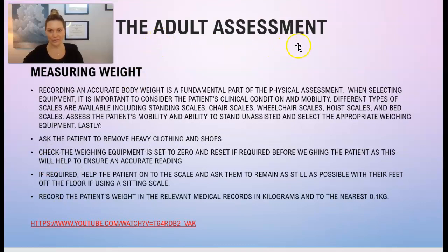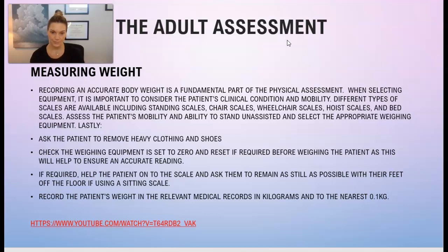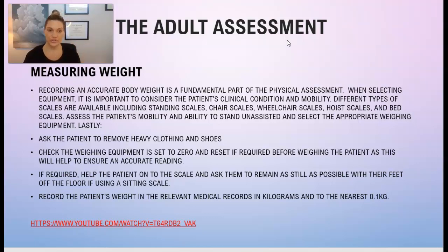Now on to weight — we'll also be measuring weight on every encounter with a patient. Accurate body weight is very important for the physical assessment and overall physical health. When selecting equipment, it's important to consider the patient's clinical condition and mobility. There are different types of scales available including standing scales, chair scales, wheelchair scales, hoist scales, and bed scales.